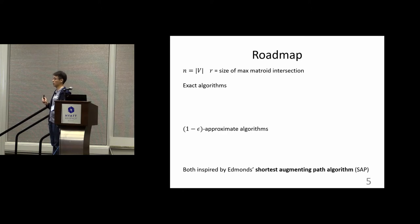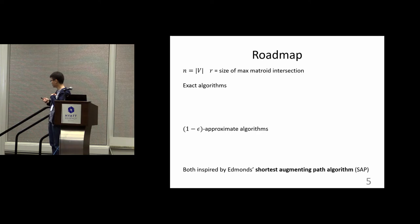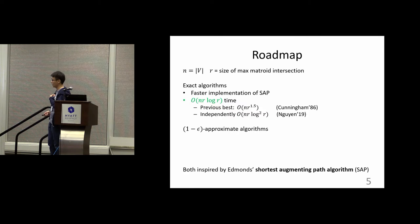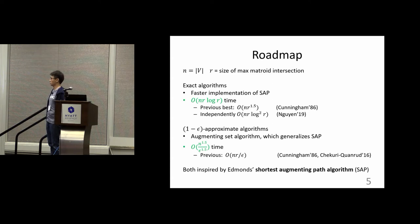We study both exact and approximate algorithms for the problem, and both of our algorithms are inspired by the famous augmenting path algorithm due to Edmonds in the 1960s. For the exact algorithm, which is essentially a faster implementation of that algorithm, our running time is roughly N·R, better than the previous N·R^1.5 due to Cunningham — and there is an independent work by Gurĭn achieving a similar running time. For the approximate regime, we get the first sub-quadratic time algorithm, running in time N^1.5, which is better than the current best of N·R for small N.